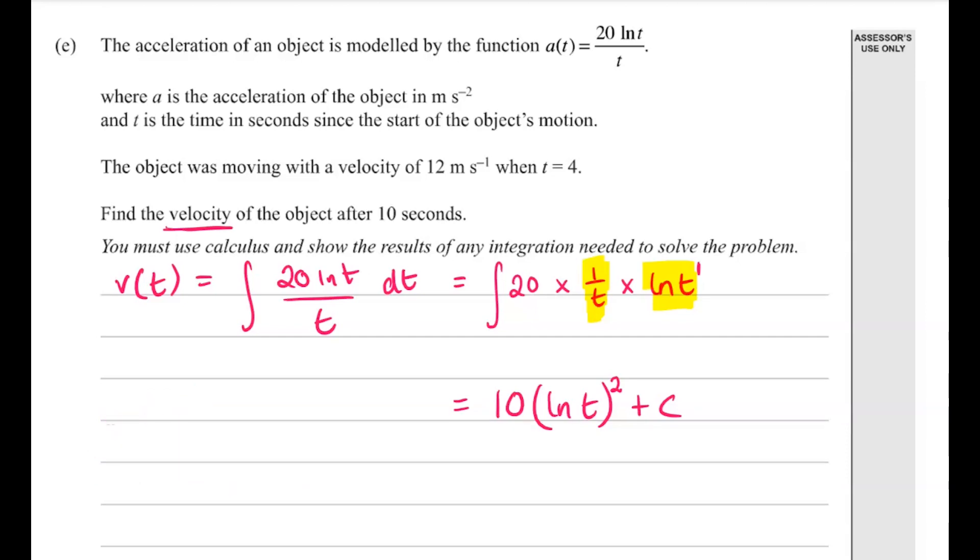It's not so obvious to see that one at the beginning, to think about how you would go about integrating that natural log of t part. Next we can substitute in some values, so we've got the velocity was 12 at t is 4, and that will help us to work out c.